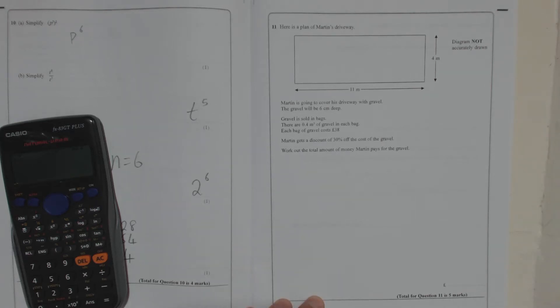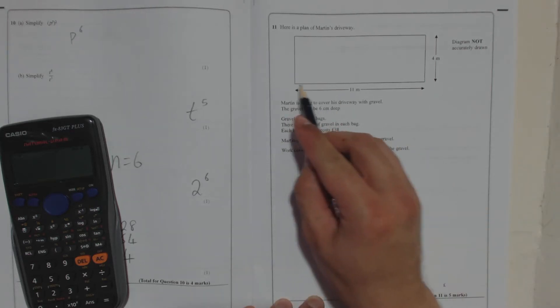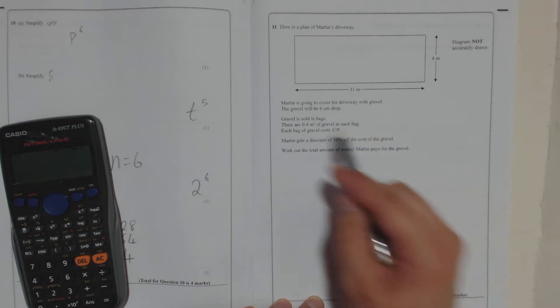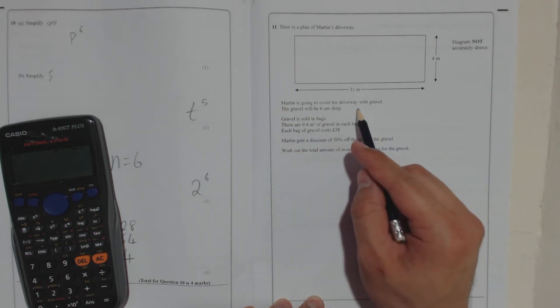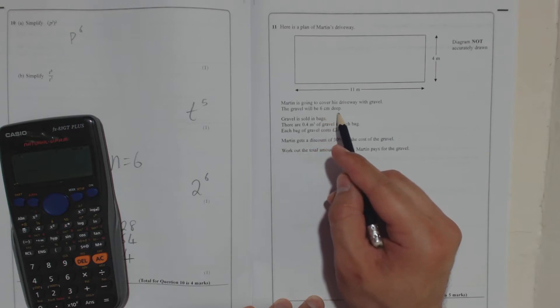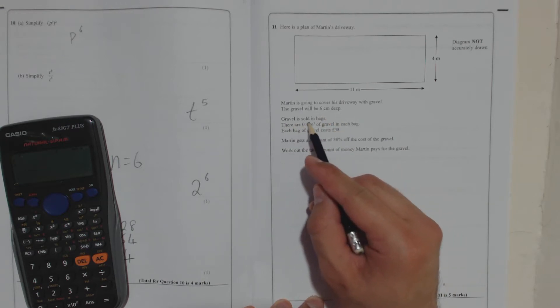Question 11. Here is a plan of Martin's driveway. So 11 metres by 4 metres. Martin is going to cover his driveway with gravel. The gravel will be 6 centimetres deep. Gravel is sold in bags.